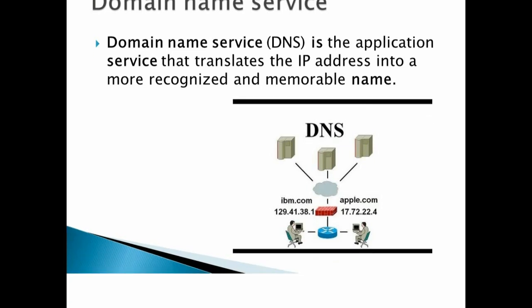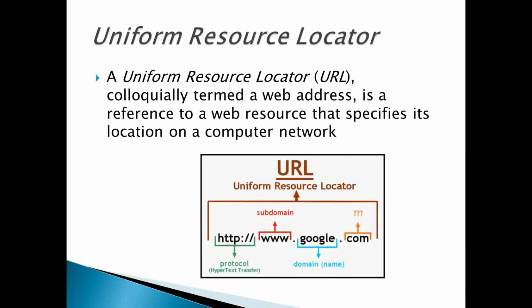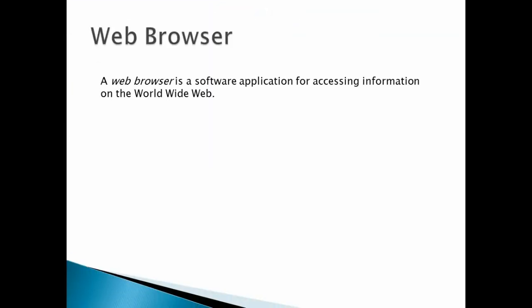A Uniform Resource Locator (URL), commonly called a web address, is a reference to a web resource that specifies its location on a computer network. A URL helps in locating a particular website — on which server, on which file. For example: HTTP is the protocol, www is the subdomain, google is the domain name, and .com is the extension. Together, this is the URL.